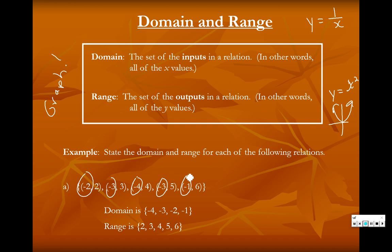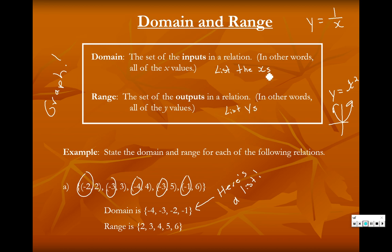Notice the curly brackets — those are meaningful. Students in data management will run into curly brackets. In math, when you see curly brackets, it almost always means 'here's a list.' That's what curly brackets represent — a list of numbers. So for domain and range, it's just a nice list. To summarize: list the x's, list the y's — that's all we're trying to do with domain and range.